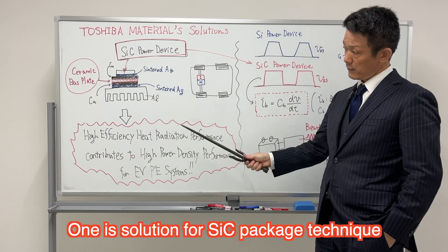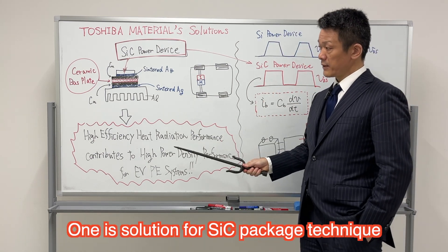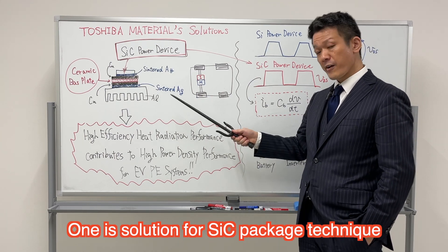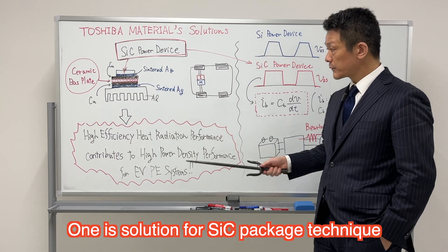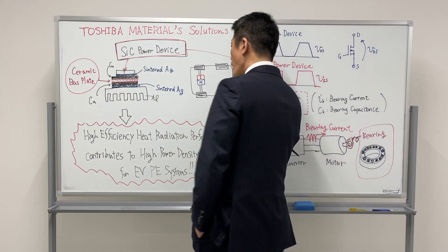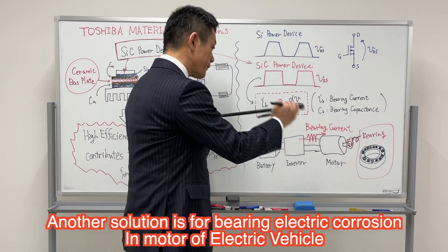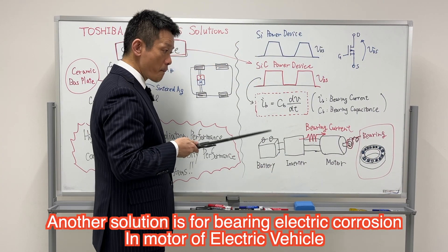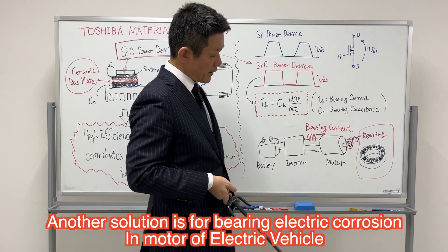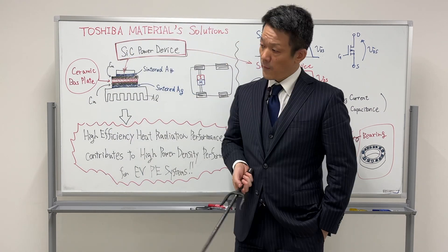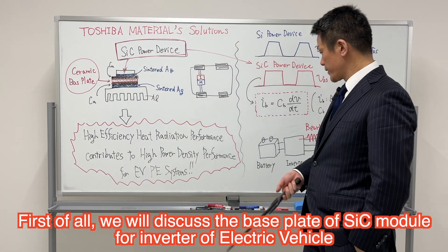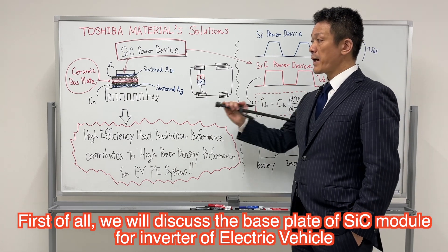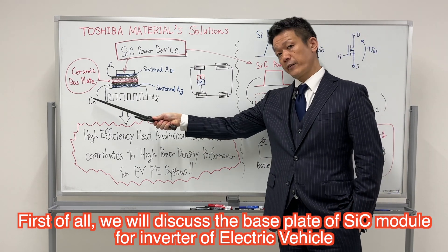One solution is the ceramic base plate for silicon carbide packaging, and another one is the ceramic ball for bearings. First, we will discuss the ceramic base plate.